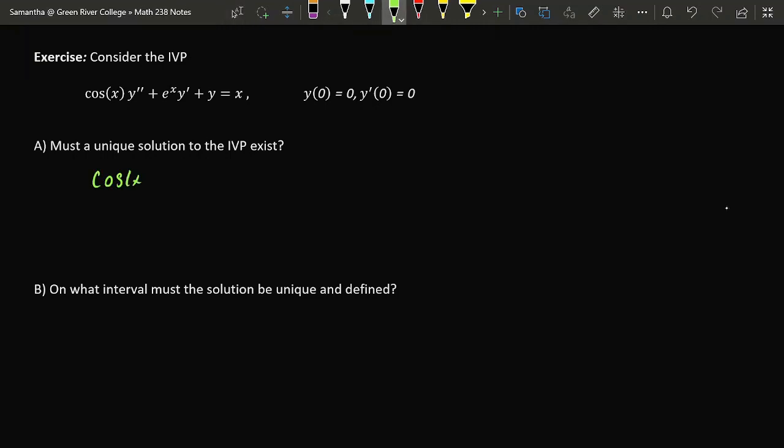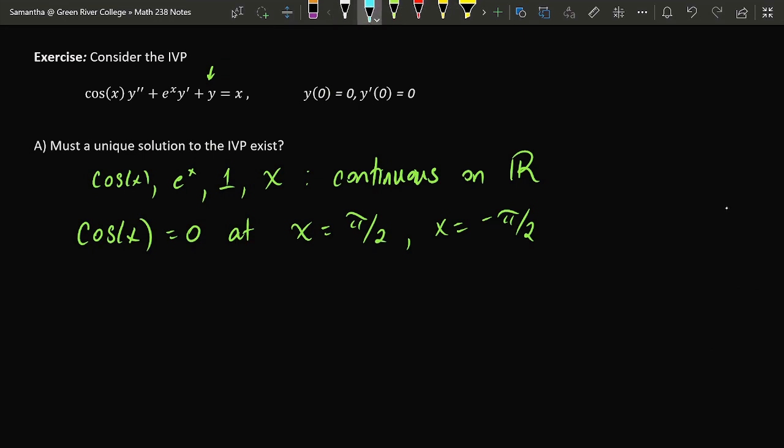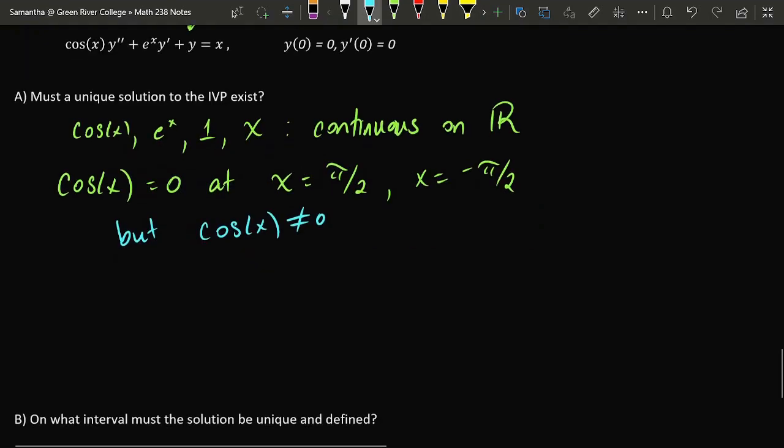To answer that question, I'm going to look at the functions cos(x), e^x, the function in front of y is just the constant function 1, and the function x on the far right side. All of these functions are continuous at every point. They're continuous as x goes from negative infinity to infinity. However, there are moments when cos(x) is equal to 0. In particular, cos(x) puts out 0 when x is equal to π/2 and x is equal to -π/2.